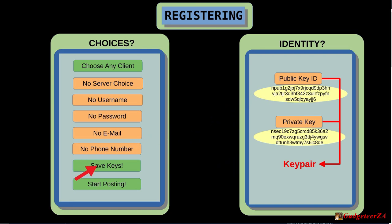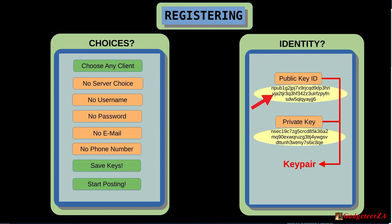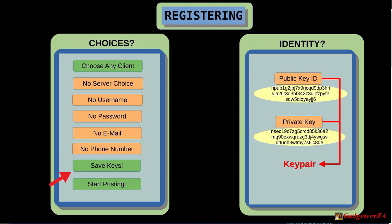The app also generates an associated private key. Together they make a cryptographic key pair — only the person with the private key can prove ownership of that public key and unlock the account. This is very important: save your public key ID and save your private key. If you lose the private key, it's gone — there is no password reset. Your posts will stay there, but you won't be able to respond to them or delete them as yourself.